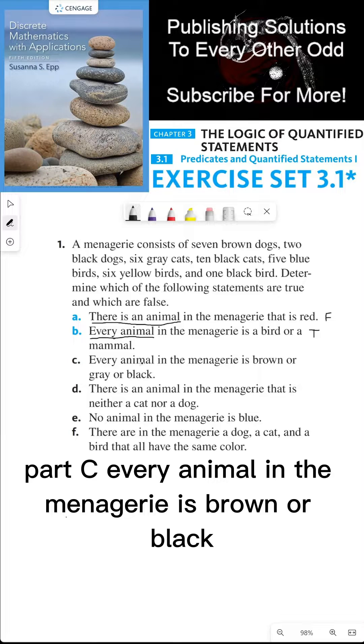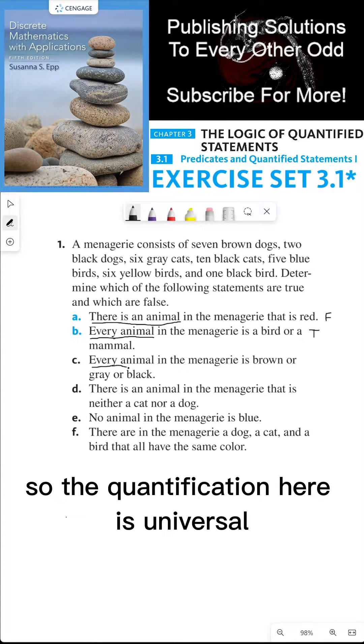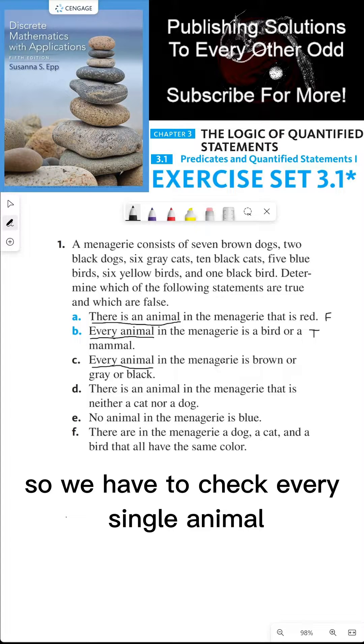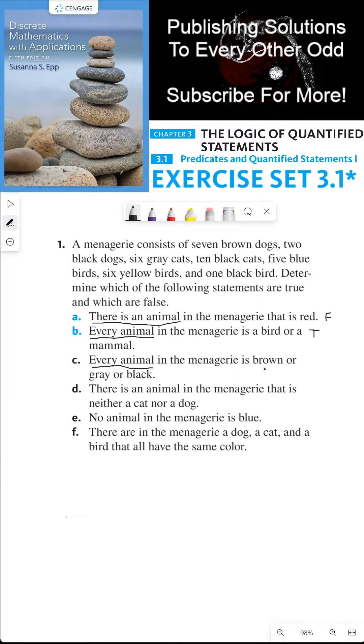Part C. Every animal in the menagerie is brown or black. The quantification here is universal, so we have to check every single animal and determine whether it is brown or gray or black. We have the seven brown dogs, that's brown. Two black dogs, that's black. Six gray cats, that's gray.